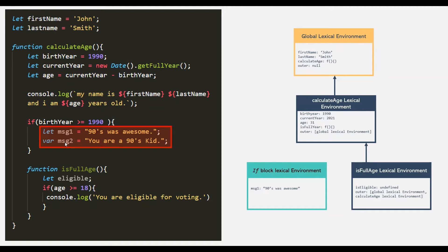Since message2 has the scope of the calculateAge function, it will be stored in the lexical environment of this calculateAge function. This lexical environment will also have an outer variable which has a reference to all its parent scopes. In the case of this if block, the parent scope is the calculateAge function and also the global scope. That's why you can see here we have a reference to the global lexical environment and to the lexical environment of the calculateAge function.